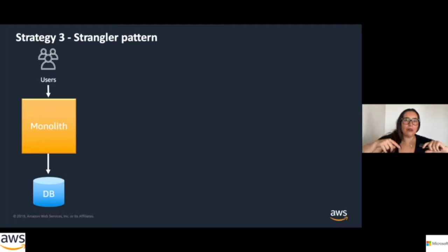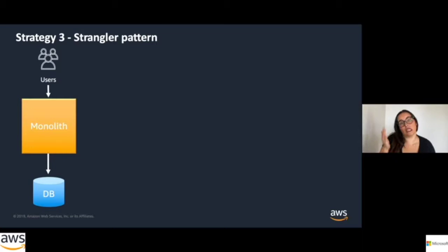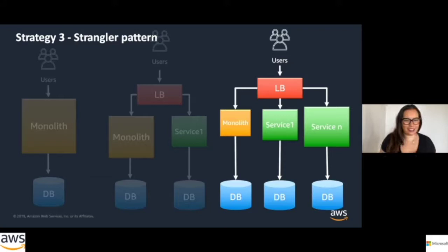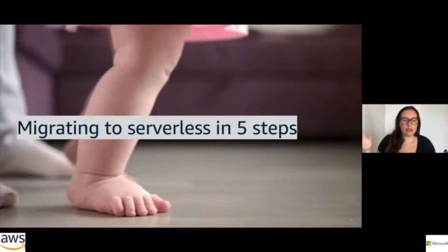Strategy three is the strangler pattern — the one I strongly recommend. You have a monolith and start strangling it until services are extracted, either fully or until the remaining monolith is small enough to not care about. The name likely comes from the fig plant that strangles a tree — the tree dies and you're left with the fig plant in the shape of the tree. You'll have a monolith with one database and need to break up the API, database, and code itself.